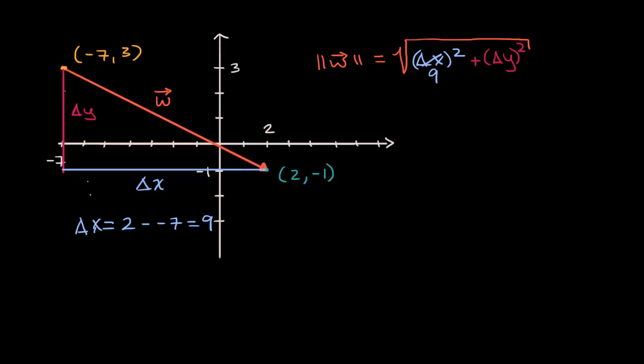And then what is our change in y? Our change in y, you could view this as your y final, which is negative one, minus your y initial, which is three, which is equal to negative four. And you did indeed go down by four. So this is going to be negative four.